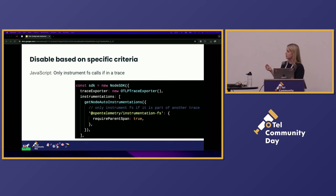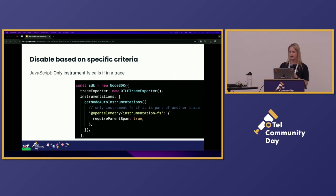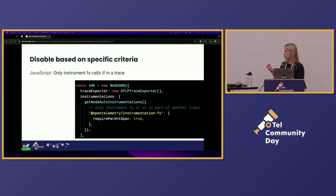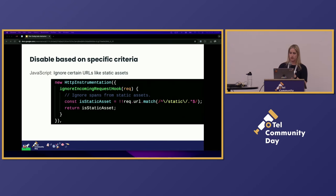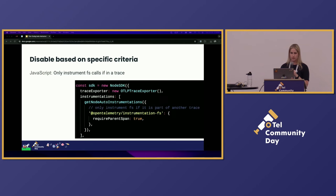For JavaScript, before I showed the example of disabling FS instrumentation entirely — that's a little bit heavy-handed, especially if there are actual times you're interested in instrumenting file system calls. A common thing to look at instead is the 'require parent span' option, which says you only want to instrument file system calls if they're already part of a trace — not all the things that start as your app is booting up. Another option with HTTP instrumentation is that there may be some calls you don't care about, like calls for static assets, so we have hooks available that let you disable those specific URLs.